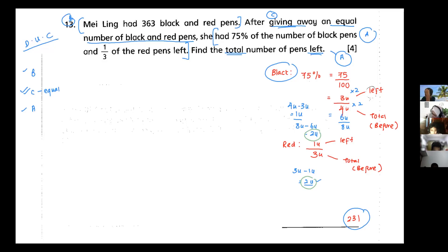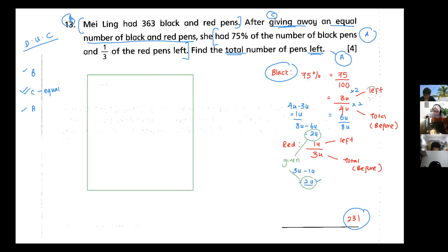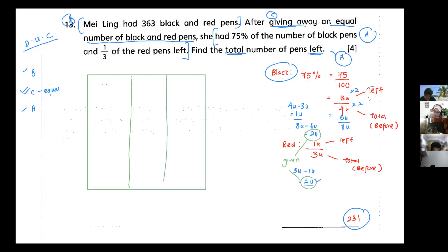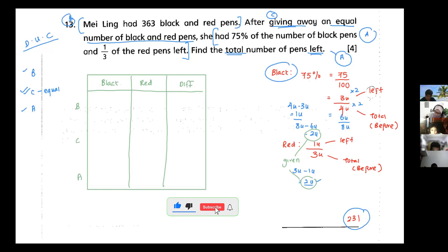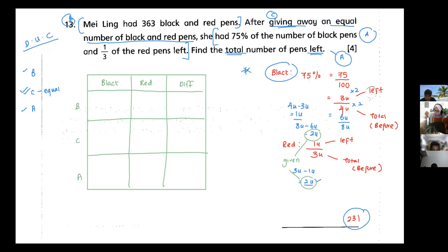The given away is the same — great! Now I can draw out my table. I divide it into three columns: black, red, and difference, with rows for before, change, and after. I pick and put all the information from here into the table.